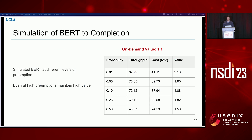To understand how value performs at different preemption rates, we developed a simulator that closely modeled the different parts of Bamboo and ensured simulation results matched actual results, then ran a simulation of training BERT to completion at a set of different preemption probabilities — the probability of preemption per hour per instance. As the number of preemptions increased, we were still able to provide high value compared to on-demand, largely because we could continue training without stopping, and because as throughput falls, cost falls as well due to the lower average number of instances.